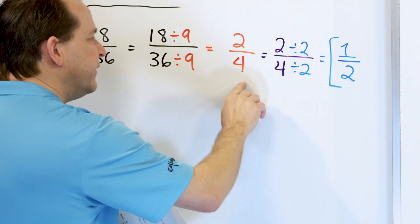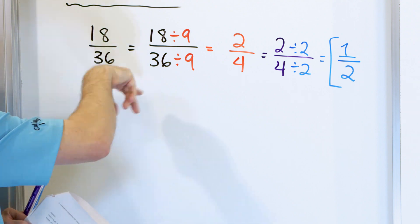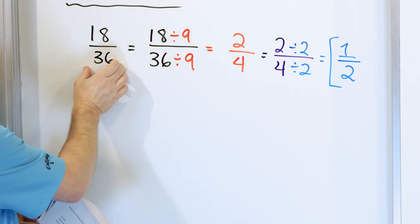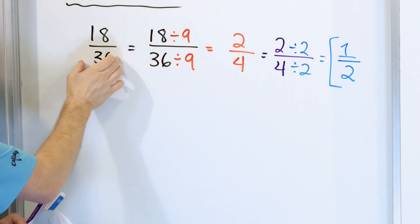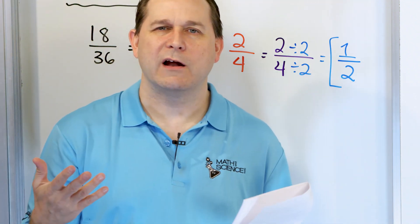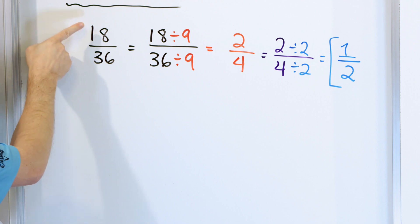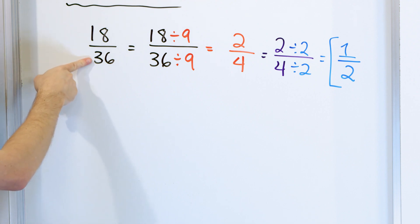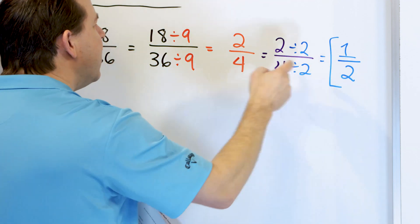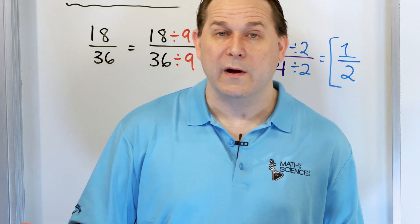We had to go through two division steps to get to the final answer. If we had divided by 2 initially, we'd have to do it even more times. Since it took two steps anyway, we know there must be a bigger factor we could have divided by. You could have divided top and bottom by 18: 18 divided by 18 is 1, and 36 divided by 18 is 2 - same answer in one step. But just pick the thing that you know and go from there.